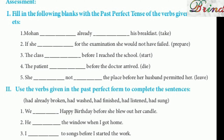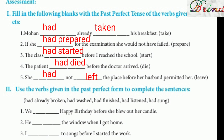Now moving on to the assessment part, Roman numeral one. Fill in the following blanks with the past perfect tense of the verbs given in brackets. 'Mohan had already taken his breakfast.' — take, took, taken; use 'had' in the first blank and the third form of the verb in the second blank. 'If she had prepared for the examination, she would not have failed.'